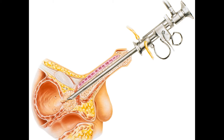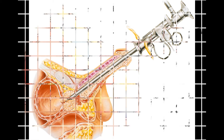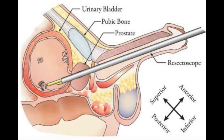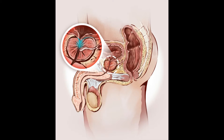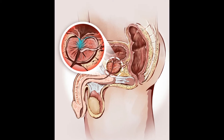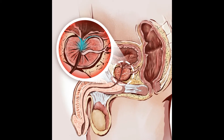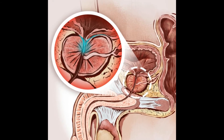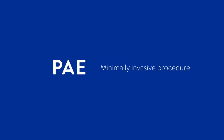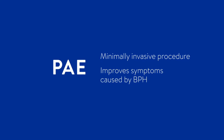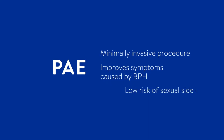Treatment options can include cystoscopy to visualize and treat, resection of the prostate, or resection of the tumor. Unfortunately, sometimes the problem is so severe that the only way to resolve the bleeding is to remove the prostate — a procedure called prostatectomy. Fortunately, we have developed new less invasive techniques. This technique is performed by interventional radiologists and is called PAE, or prostate artery embolization.